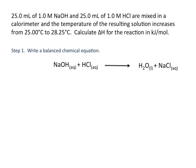Let's look at an example. In this example, 25 milliliters of 1 molar NaOH and 25 milliliters of 1 molar HCl are mixed in a calorimeter, and the temperature of the resulting solution increases from 25 degrees Celsius to 28.25 degrees Celsius. Calculate delta H for the reaction in kilojoules per mole.